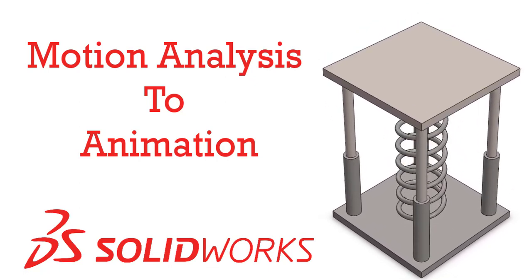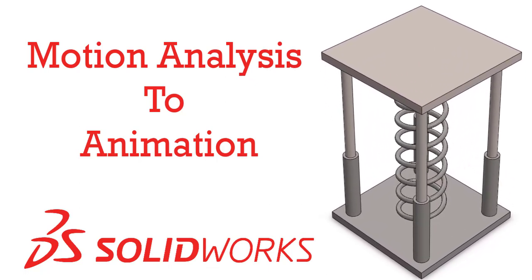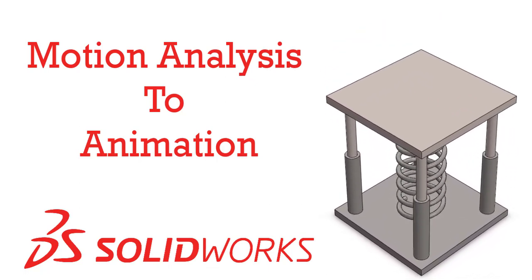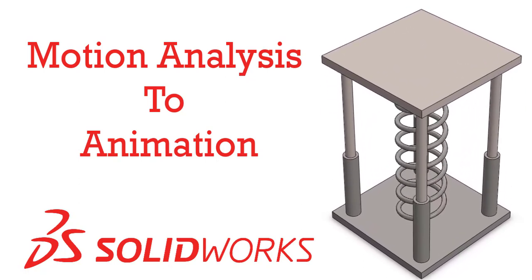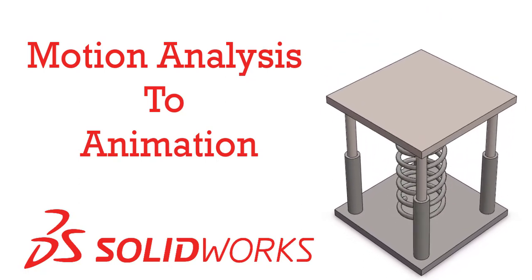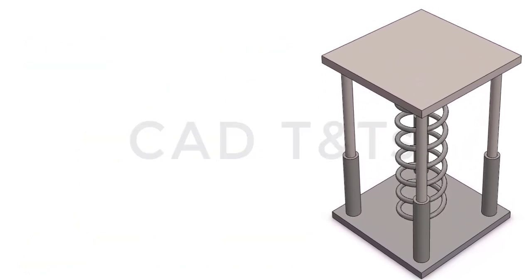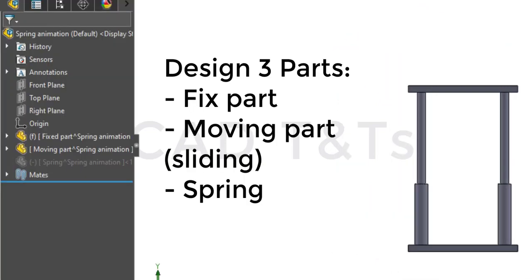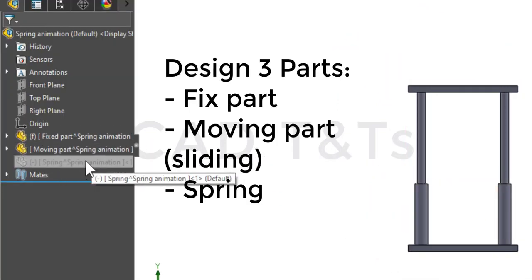Today I'm going to show you how to use motion analysis results to create animation — as an example, a spring animation. So let's get started. First of all, let's design three parts: the fixed part, the moving part, and the spring.